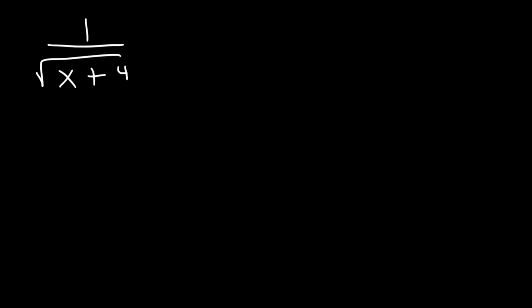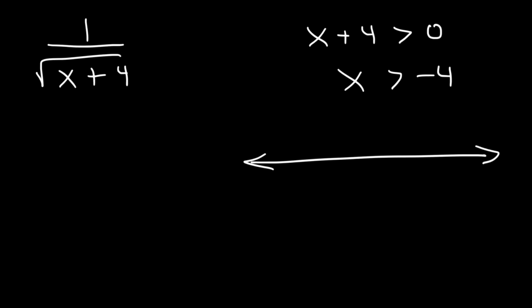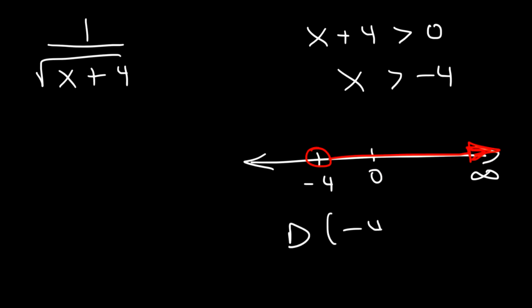Now what if it was 1 over the square root of x plus 4? This time, x plus 4 has to be greater than 0, but not equal to 0. You cannot have a 0 in the bottom of a fraction — 1 over 0 is undefined. So it's going to be greater than 0 but not equal to it, meaning x is greater than negative 4. On the number line, we're going to have an open circle as opposed to a closed circle. So the domain is going to be from negative 4 to infinity, using parentheses as opposed to brackets.